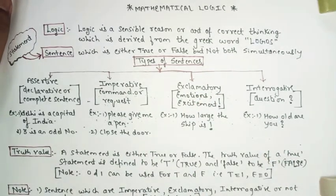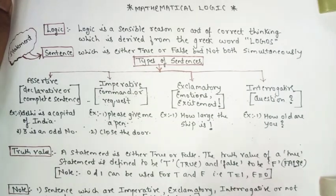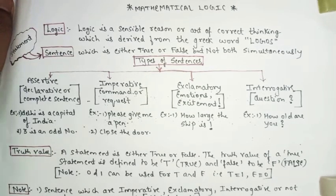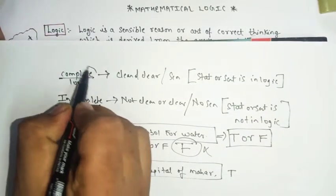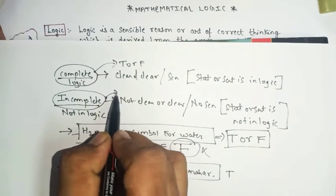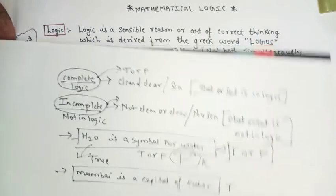What do we mean by Exclamatory? It expresses emotion or excitement. For example: 'How large this ship is!' This is an exclamatory sentence. When you read it, we are not getting the answer in terms of true or false. You cannot say 'true, how large the ship is' or 'false, how large the ship is' — that makes no sense. A complete sentence gives an answer of true or false; an incomplete sentence cannot give that answer. So exclamatory sentences are also incomplete.